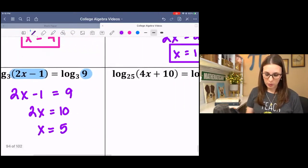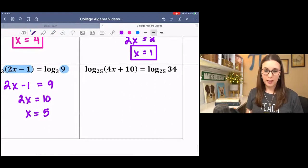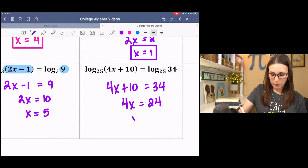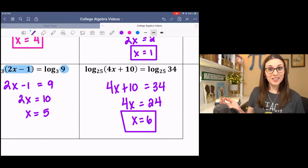Go ahead and try the next one. And then come back and check. You should get 4x plus 10 equals 34. Subtract 10. Divide by 4. The end. That's all.